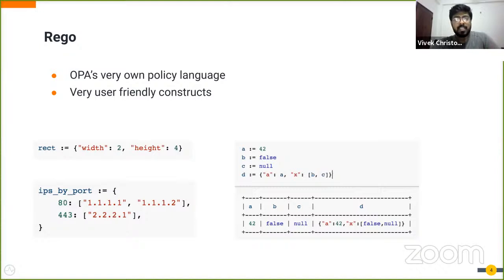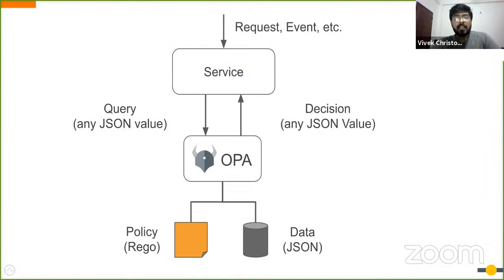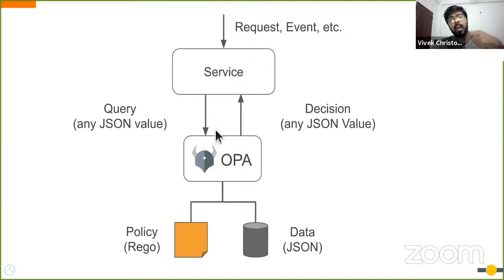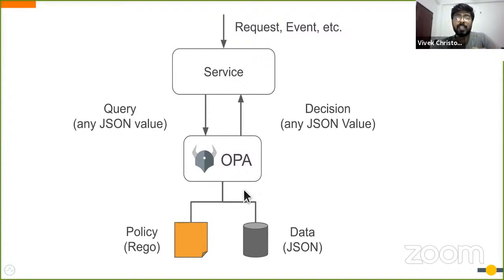Open Policy Agent has defined its own policy language called Rego, which is very user-friendly. We can define policies using Rego and upload those policies along with the necessary data to the OPA engine. At the time of policy enforcement, we query it with any valid JSON value, and OPA evaluates and sends back a decision based on those policies.